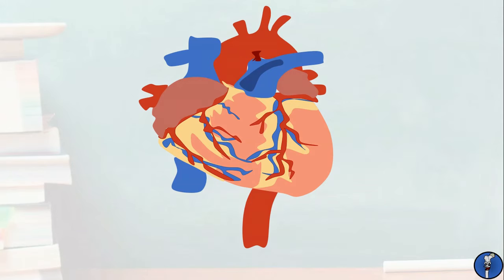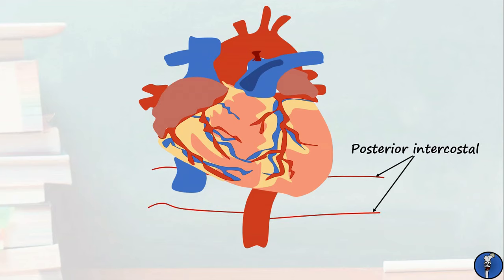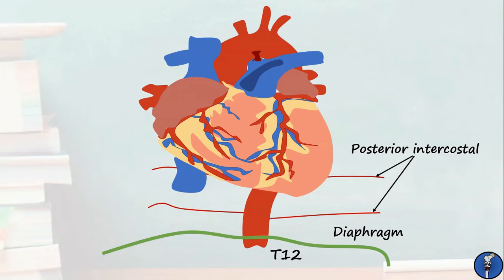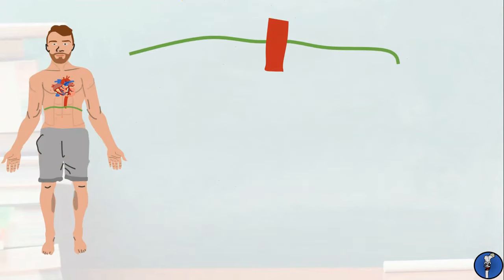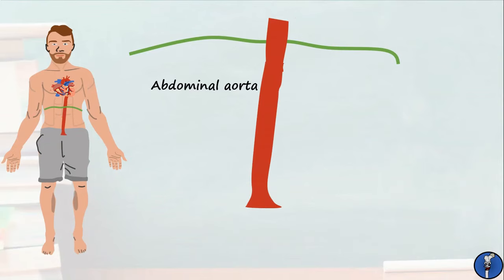While in the thorax, the aorta produces a number of small branches. The most important to be aware of right now are the 3rd to 11th posterior intercostal arteries, which supply their corresponding intercostal spaces. The thoracic aorta passes through the diaphragm at the level of T12, and when it does so it becomes known as the abdominal aorta.